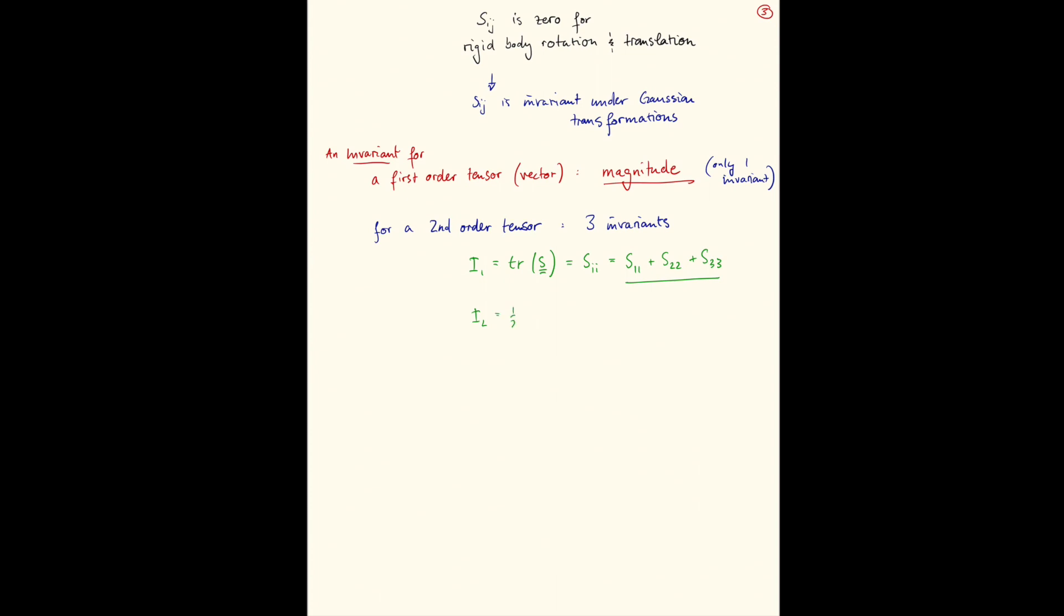The other two are a little more complicated. One is a half the trace of S squared, which is a half SIJSJI. And the third one is a third of the trace of S cubed, which is a third SIKSKJSJI. I'm only listing these really for completeness right now.